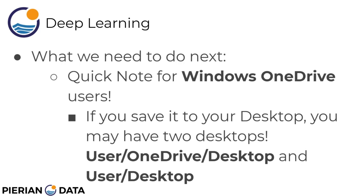As a quick note for Windows users who use OneDrive: a lot of students say they thought they saved the file on their desktop but then have trouble finding it. If you're on Windows and use OneDrive, you actually have two desktop folders — a user/OneDrive/desktop folder and a user/desktop folder. You can always check the file properties to understand which desktop you're actually saving stuff to.